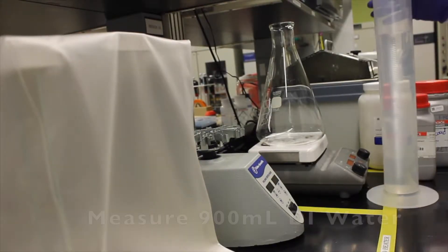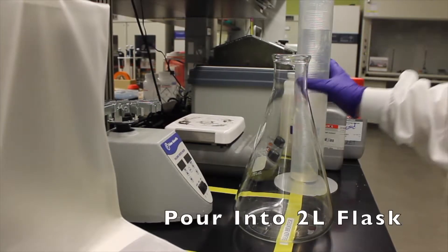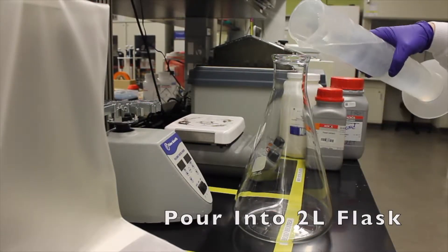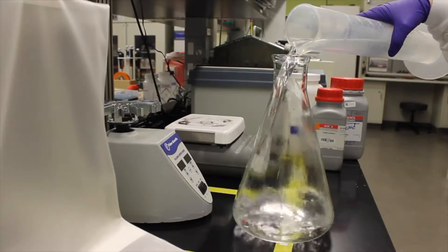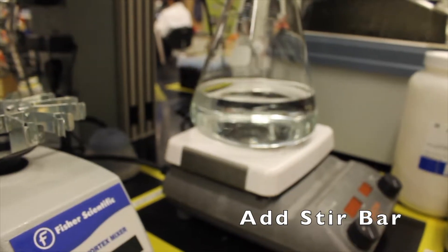Measure out 900 milliliters of DI water into a graduated cylinder. Pour this water into a 2 liter flask and place on your stir plate. Add your stir bar and begin stirring.